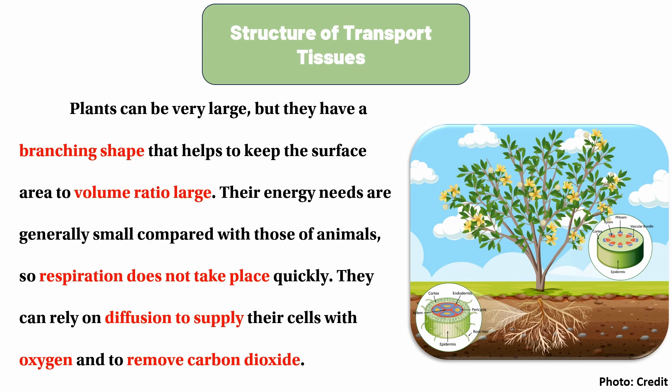They can rely on diffusion and respiration to supply their cells with oxygen, to take in oxygen from the air, and to remove carbon dioxide. If we are going to transport oxygen and carbon dioxide, we need sufficient energy and adequate surface area.